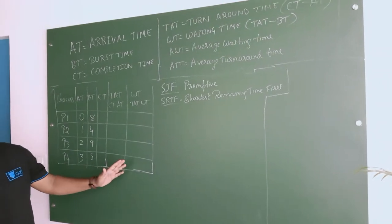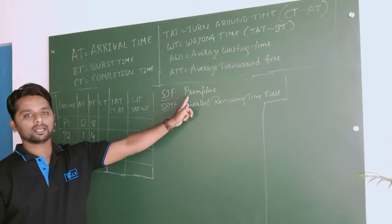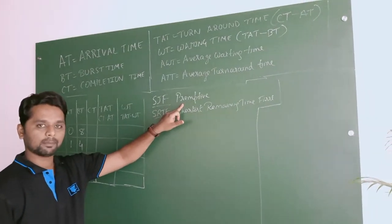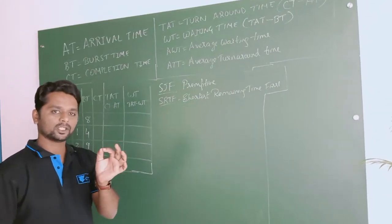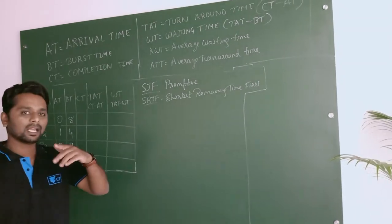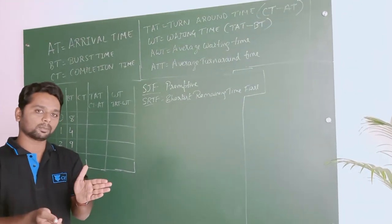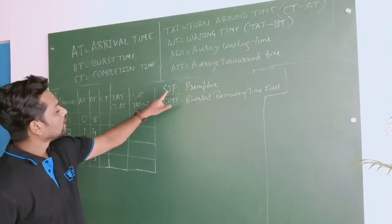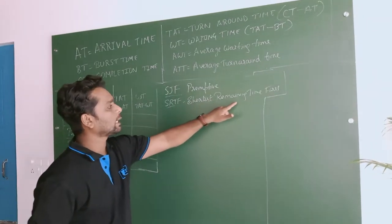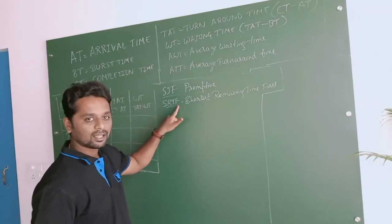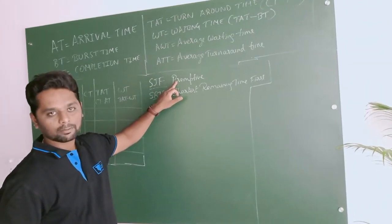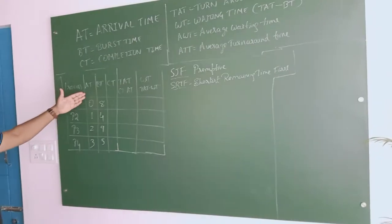Today we are going to discuss SJF preemptive. Last class we discussed non-preemptive for the same table. Preemptive means it is going to shift from one process to another process based on the algorithm — it interrupts the running process and reallocates to a higher priority process. For SJF preemptive, keep in mind it can also be called Shortest Remaining Time First (SRTF). Questions may also be asked as SRTF — calculate SRTF for average waiting time and turnaround time.